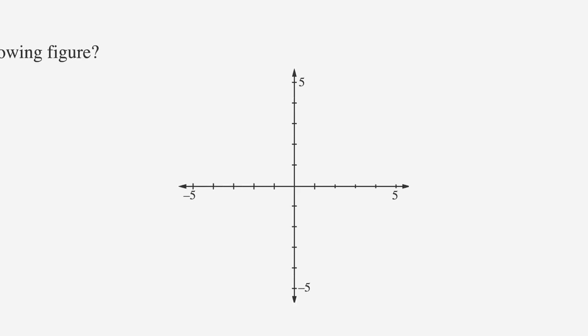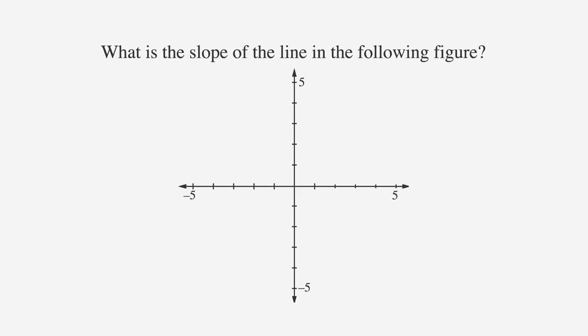Now that you know the basics, let's apply them. Here's an example of an ACT slope question. What is the slope of the line in the following figure? Start by circling the key words slope and line. Our answer choices are a, negative 3, b, negative 2, c, negative 1 half, d, 1 half, and e, 2.